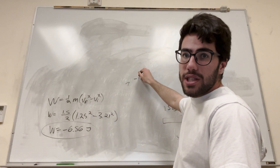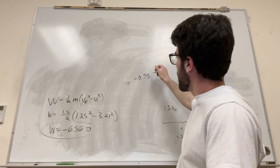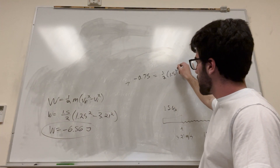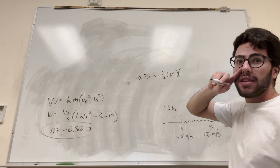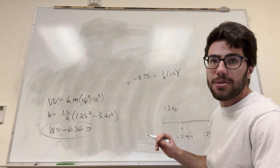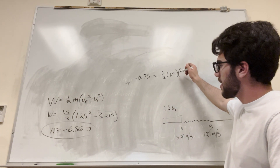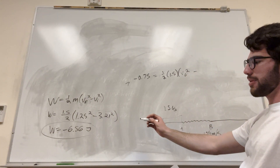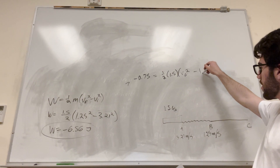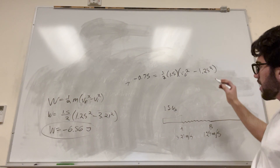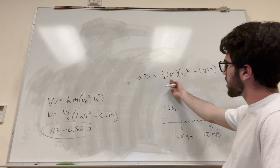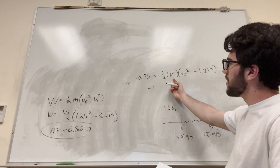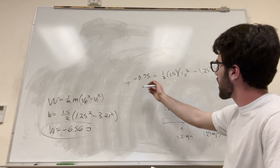So we can say that the work is negative 0.75, and that's equal to one-half the mass — one-half times 1.5. We're looking for final velocity. Its initial velocity we know is 1.25 meters per second. We rearrange: one-half times 1.5 is 0.75. Divide that from both sides, and we get negative 1.